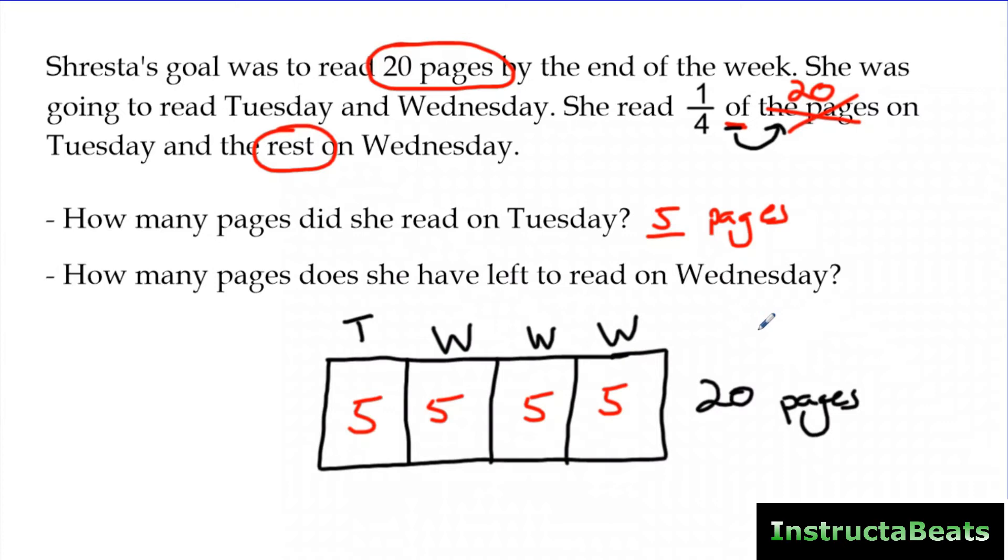Now, if the question was asking me, how many pages does she have left to read on Wednesday, my statement would say, she had blank pages left to read on Wednesday. And now, my tape diagram's the exact same. I didn't have to change anything, except I want to know what these three parts are. So I draw my little line underneath here with my question mark, and obviously, it was 15 pages on Wednesday. So by taking this information and drawing it visually, we can answer any question they throw at us.